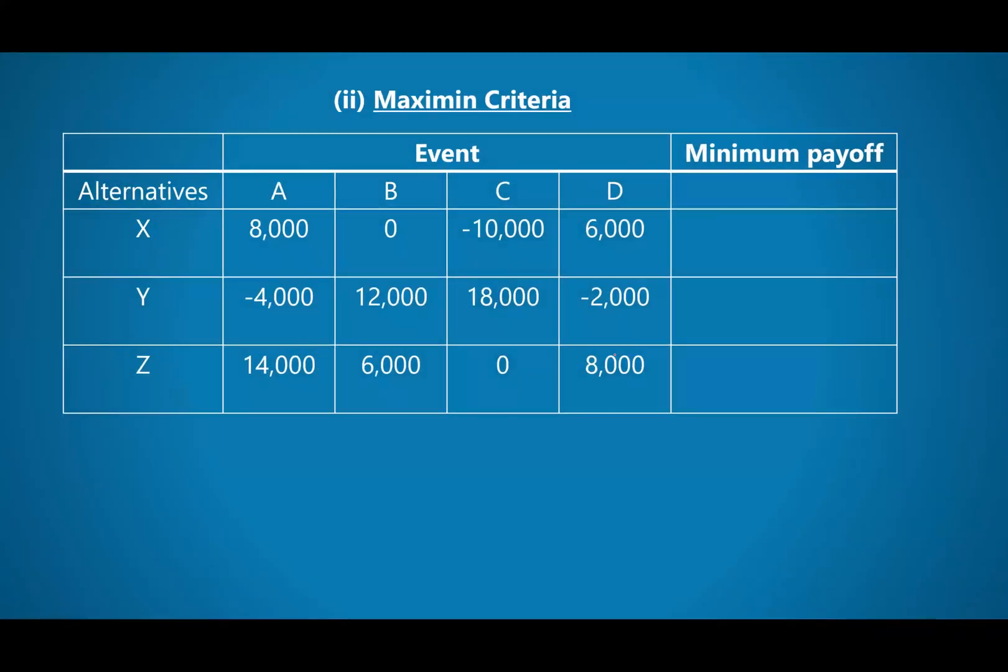What's going to happen is that you're going to look for the minimum for each. Starting with alternative X, we see that the minimum is negative 10, that's the loss. So the minimum payoff is negative 10. If the worst happens on alternative X, you're likely to lose 10,000.